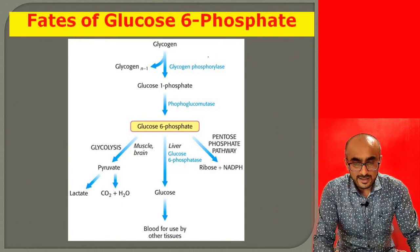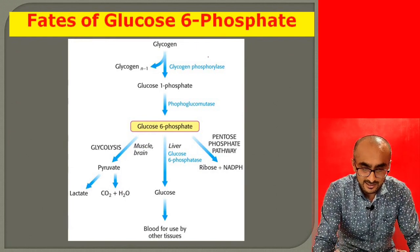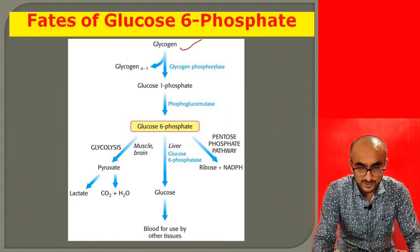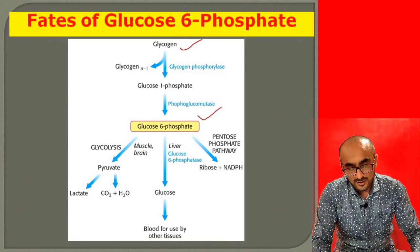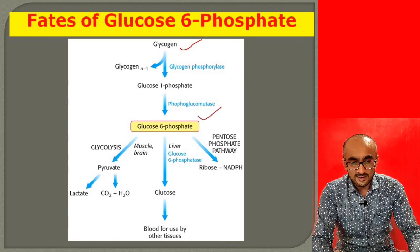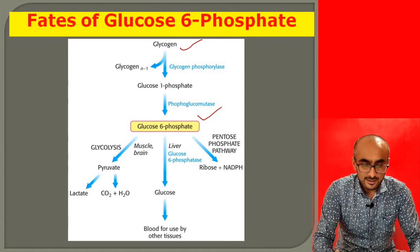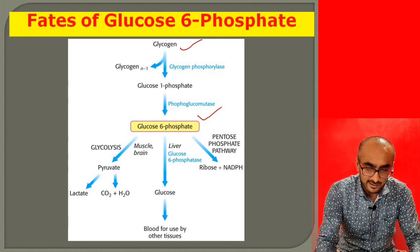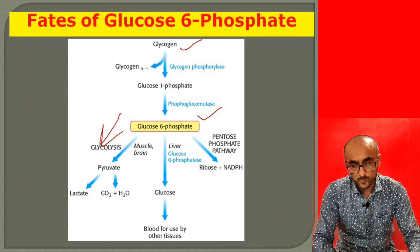Glycogen is converted into glucose-1-phosphate by the enzyme glycogen phosphorylase, and glucose-1-phosphate is converted into glucose-6-phosphate by phosphoglucomutase. This glucose-6-phosphate can then go in three directions: when the cell needs energy, it enters glycolysis and is converted into pyruvate or lactic acid.